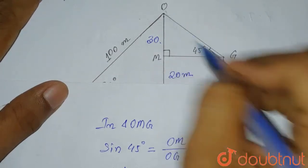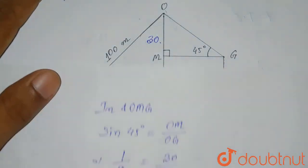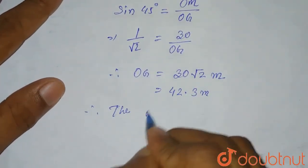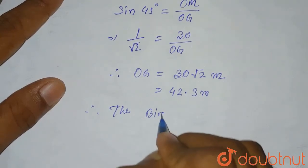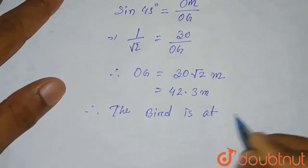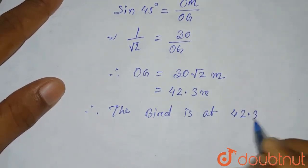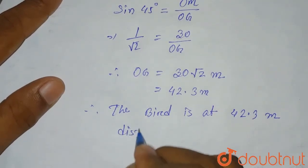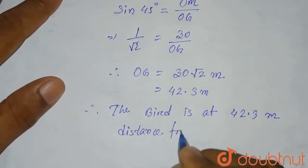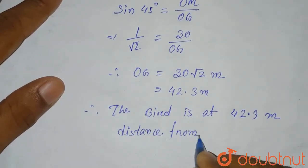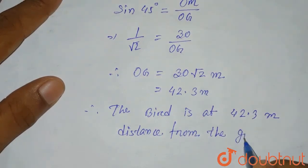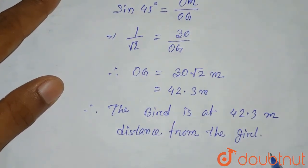OG means the distance of the bird from the girl. So we have found that therefore the bird is at 42.3 meters distance from the girl. This is the required solution of this question. Thank you.